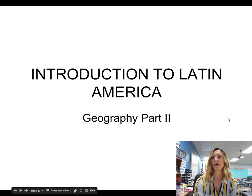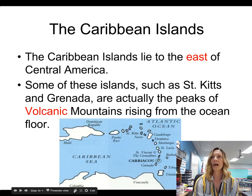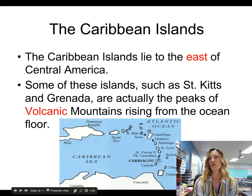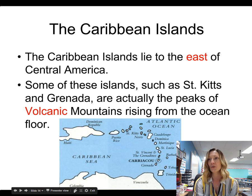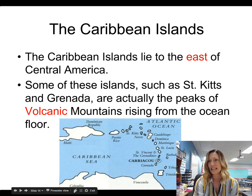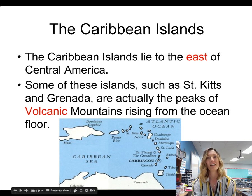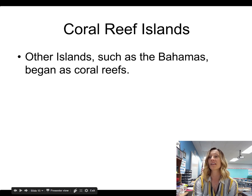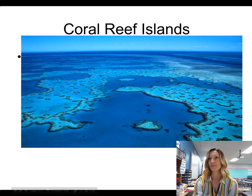Now, part two of Latin America. The Caribbean islands lie to the east of Central America. Some of these islands, such as St. Kitts and Grenada, are actually the peaks of volcanic mountains rising from the ocean floor, which is really interesting. You can see Grenada right here and St. Kitts up here — these are the tops of volcanoes coming from the sea. Other islands, such as the Bahamas, began as coral reefs. The Bahamas are off the coast of Florida, and this is what a coral reef looks like when it's still living.